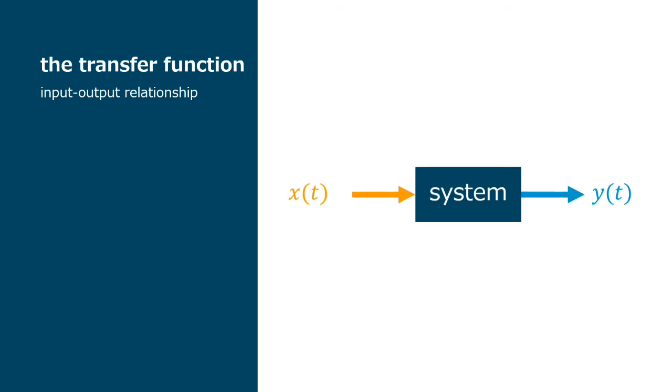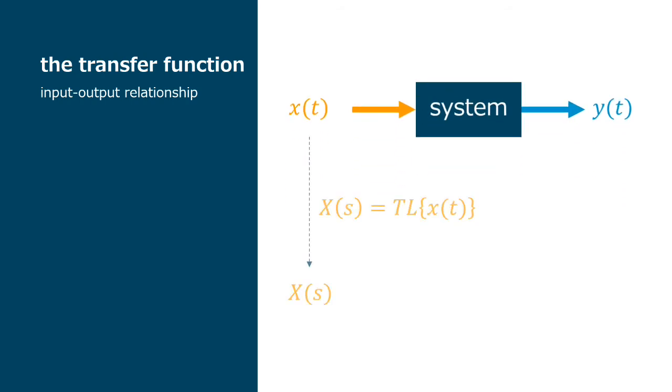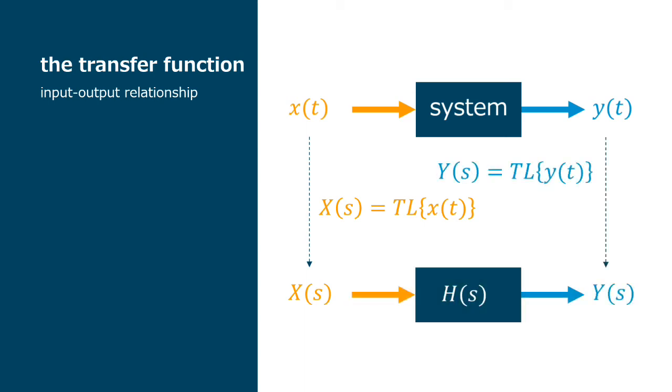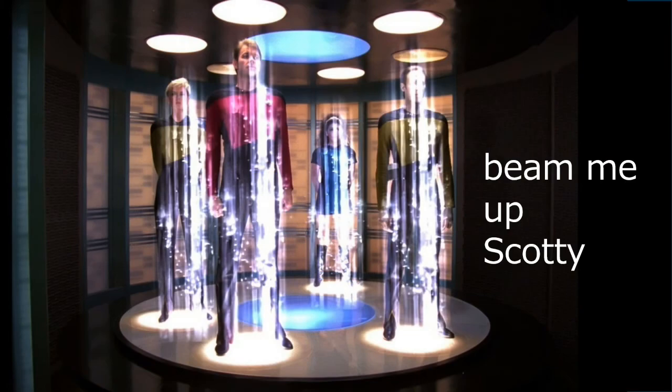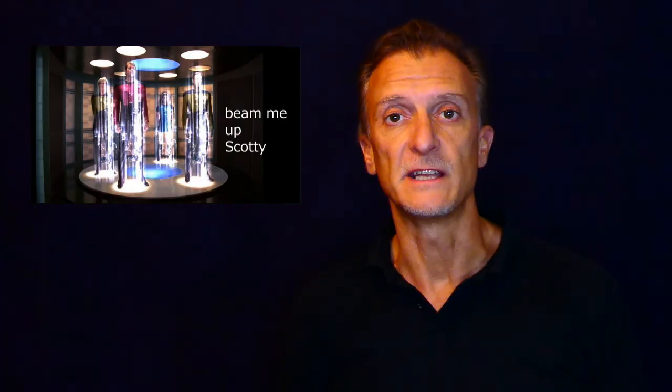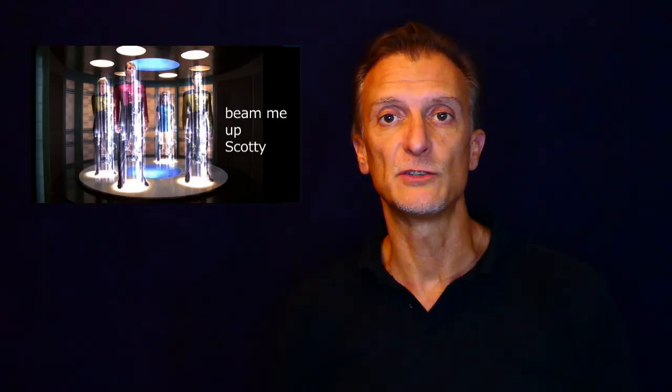So we take the original system, and we apply the Laplace transform to its input signal x, and the output signal y. What we have in between is the transfer function of the system. The transfer function is the output divided by the input, which is the same as to say that you can get the output by multiplying the transfer function by the input. So this is like beaming up, Scotty. So what happens here is that we'll be leaving the time domain and be transported to the Laplace domain.